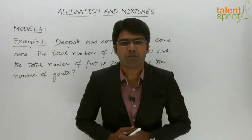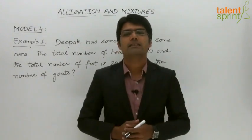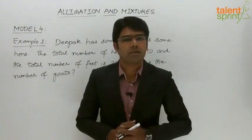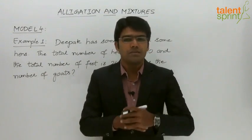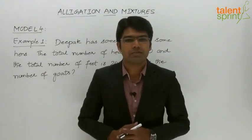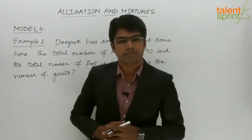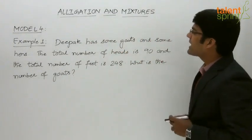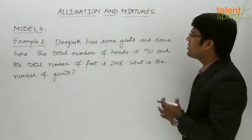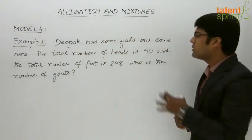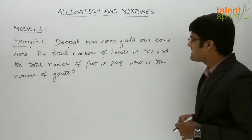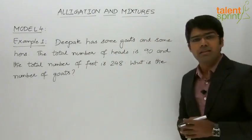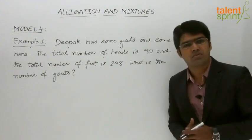Let us now take the fourth model from the topic of allegations or mixtures, where we look at some miscellaneous questions which can also be answered using the allegation rule. In example number 1, Deepak has some goats and some hens. The total number of heads is 90 and the total number of feet is 248. What is the number of goats?